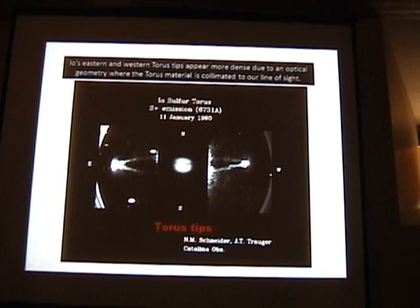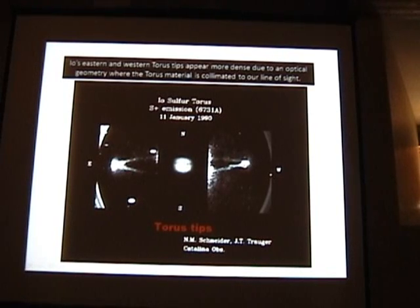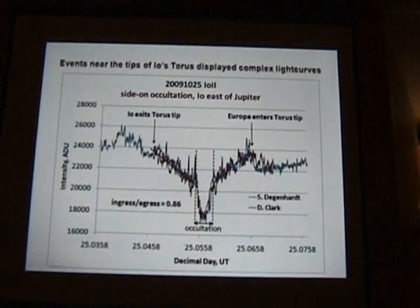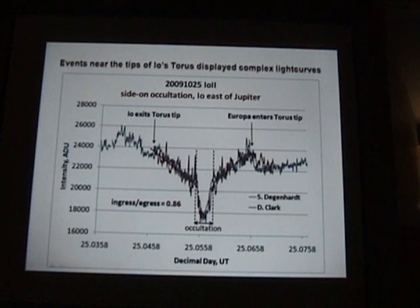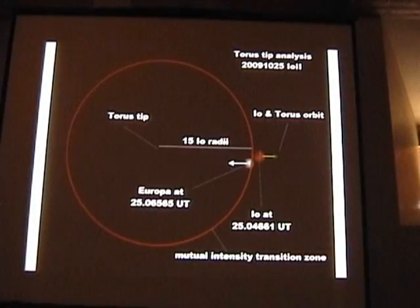I theorized that we should be able to see extinction of Io itself when it passes through its eastern or western Taurus tip. We had noticed secondary extinction notches in our light curves. When I went to model what was going on — the left-hand notch corresponded to Io exiting the Taurus tip, and the right-hand notch corresponded to Europa entering behind the Taurus tip. Both occurred in a mutual transition area.